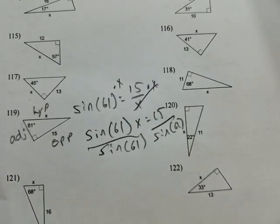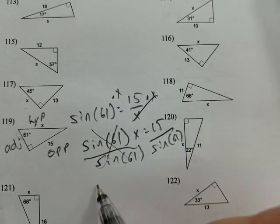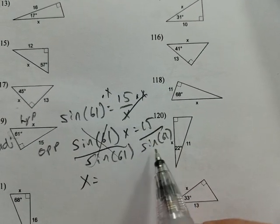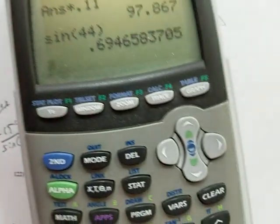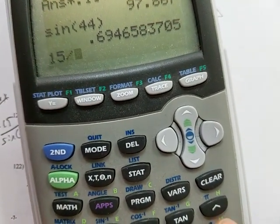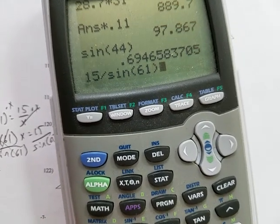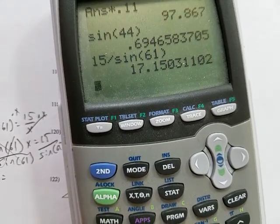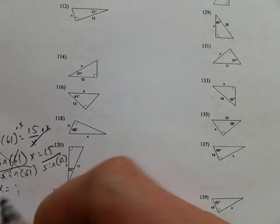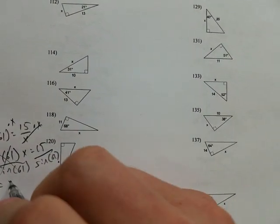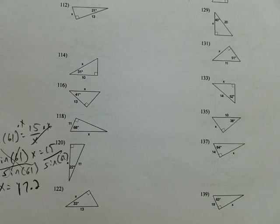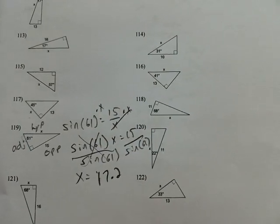Now to figure this out, those sine of 61 cancel out, and we get X equals 15 over sine of 61. So I just do 15 divided by sine of 61. And that is 17.15 or 17.2 rounded to the nearest tenth.